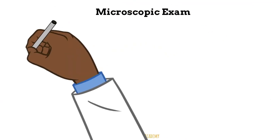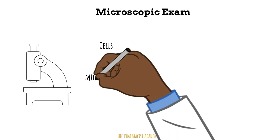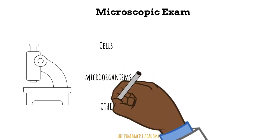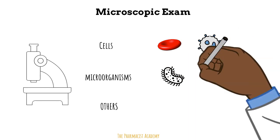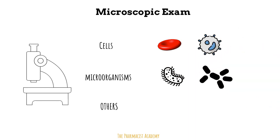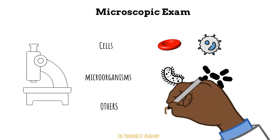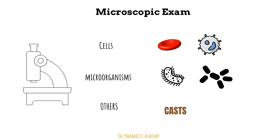The microscopic exam uses a microscope to identify cells, microorganisms, and other things. Red blood cells in the urine means there's blood in the urine — importantly, patients should inform the clinical team if they are menstruating, because it can cause contamination of the urine sample. This exam also helps identify white blood cells, usually due to a UTI. Identifying specific microorganisms can help pick the right medications for patients with an infection. The microscopic exam also looks at casts — particles found in the urine that can come from red blood cells, white blood cells, or cells lining the kidneys — and the origin of the cast can help with diagnosis.